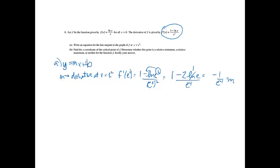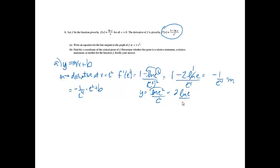My m is negative 1 over e to the 4th. Now I need my y value, so I'm going to plug e squared into the original equation: ln(e²) over e squared. That gives 2 ln(e) over e squared, which equals 2 over e squared. So that is my y value.